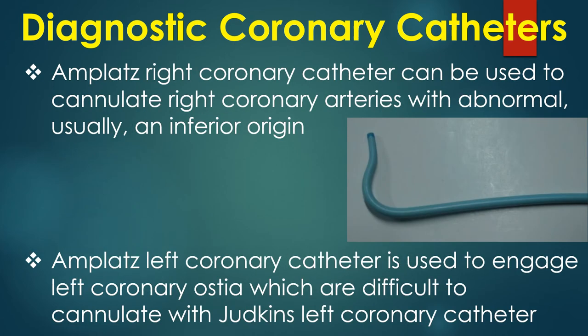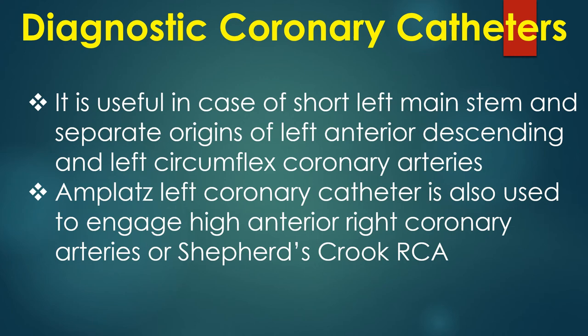The Amplatz right coronary catheter can be used to cannulate right coronary arteries with abnormal, usually inferior, origin. The Amplatz left coronary catheter is used to engage left coronary ostia which are difficult to cannulate with the Judkins left coronary catheter. It is useful in cases of short left main stem and separate origins of the left anterior descending and left circumflex coronary arteries.